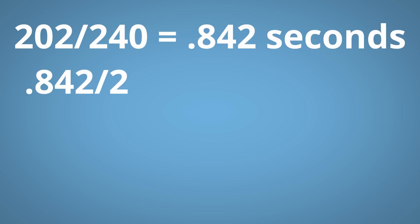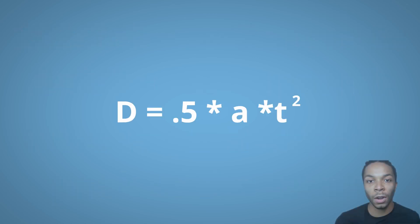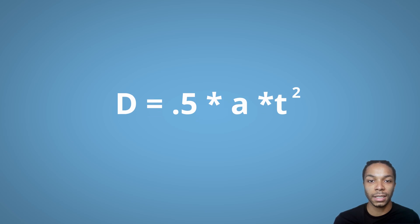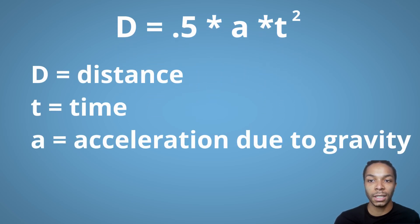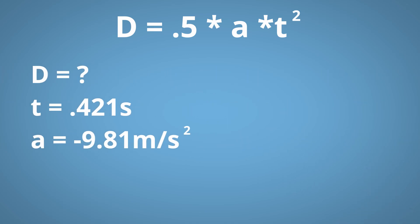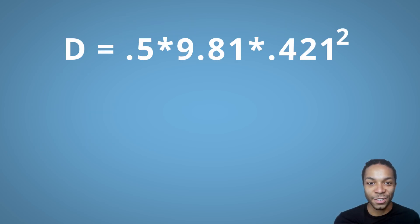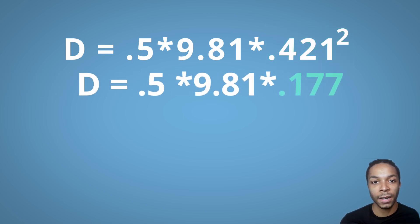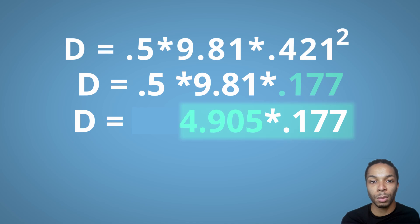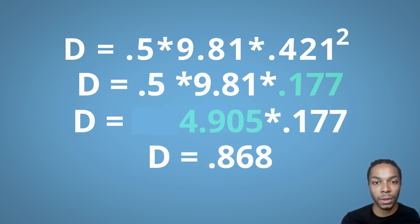If I divide that in half, I get the time from the peak of the jump to when I touch back down on the ground. We're calculating the distance from the peak of the jump to when we land, using the formula D = ½ × a × t². D is distance — what we're solving for. T is the time from the peak to landing, calculated by dividing total flight time by two. A is acceleration due to gravity, a constant on Earth's surface. We take 0.421 and square it to get 0.177, then multiply 0.5 and 9.81 to get 4.905, and finally multiply 4.905 by 0.177 to get a vertical displacement of 0.868 meters.